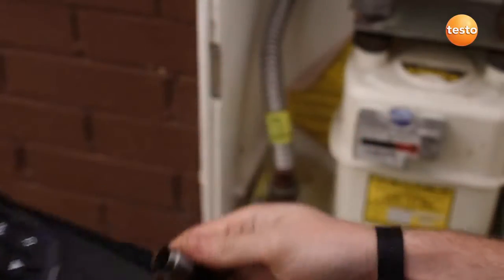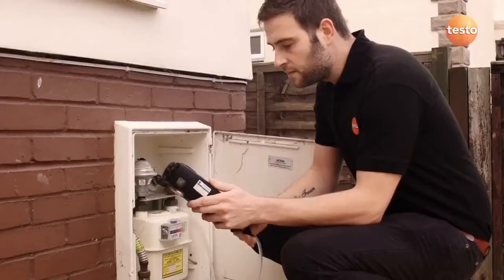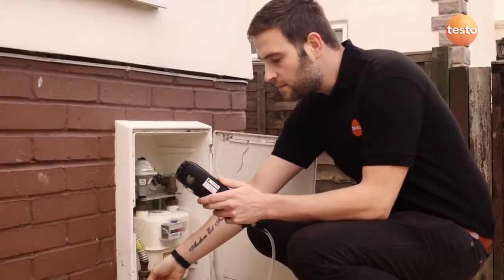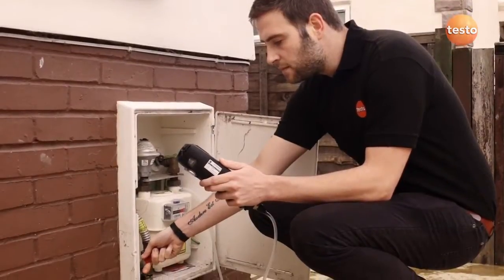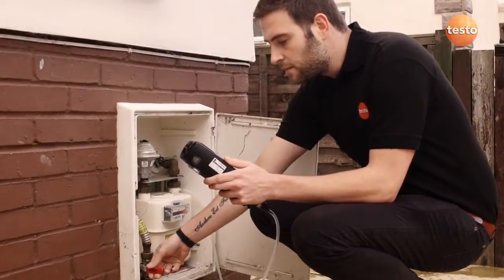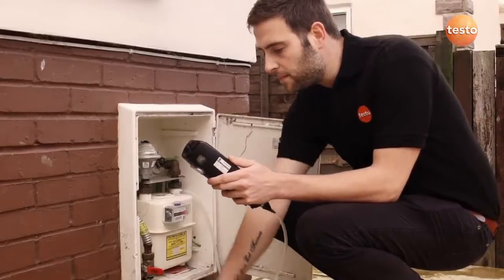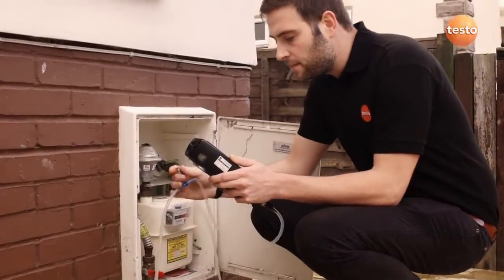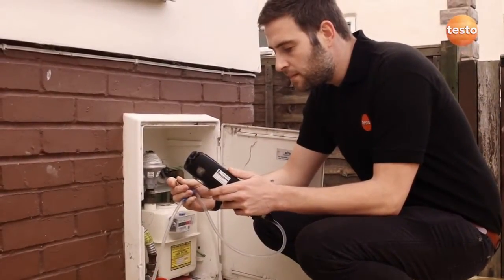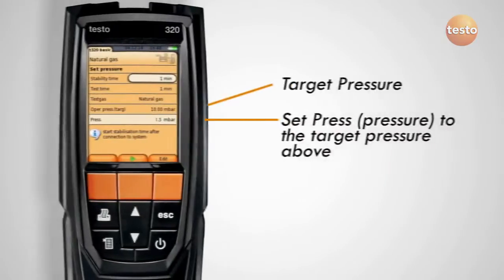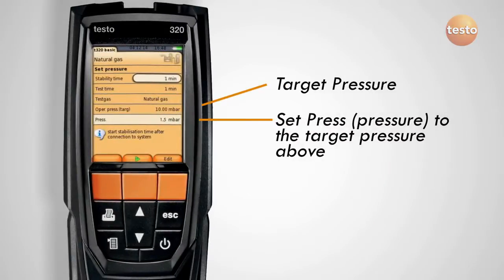Once the analyzer has zeroed, connect the hose to the test point on the gas meter and to the analyzer via the pressure adapter. Open the gas valve and pressurize the system and then close it again. Use the blue gas relief valve to reduce the pressure in the system to the target pressure shown on the analyzer. The pressure reading on the bottom line needs to be set to the target pressure shown above, in this case 10 millibars.